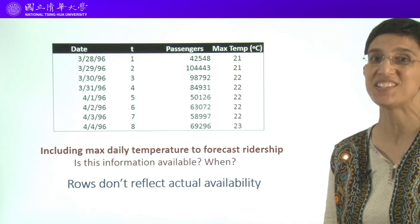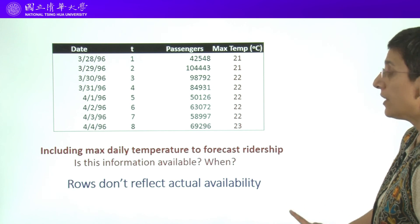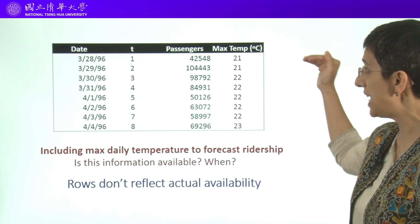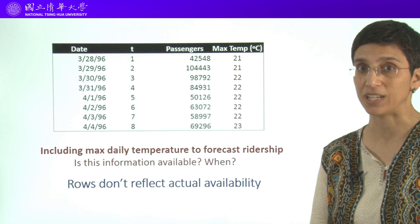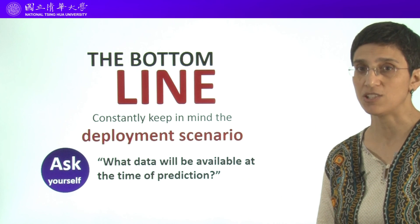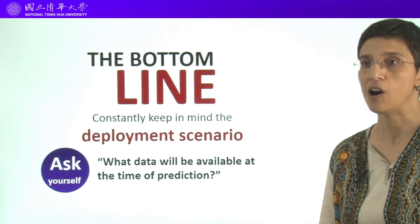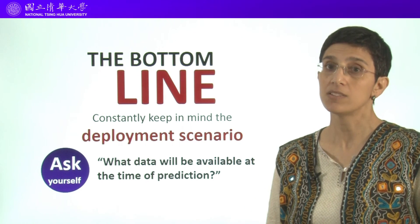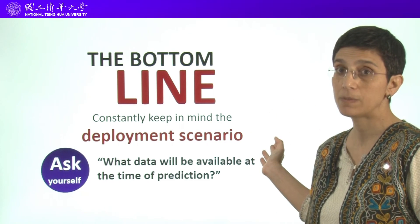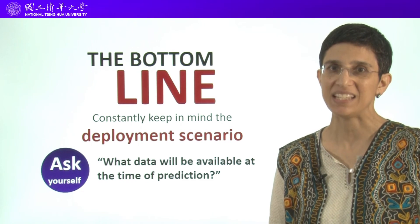The bottom line is that the fact that you have data in your file doesn't mean that you will have it at the same time points when you're deploying or creating your forecasts. So you constantly have to keep in mind the deployment scenario. In future sessions, we're going to talk about the idea of mimicking the deployment scenario. The two issues we discussed here — forecasting a past or future value, and considering carefully when data are available in your file — are closely related to the issue of deployment. Constantly ask yourself what data will be available at the time of deployment, and don't just rely on what you see frozen in your file.